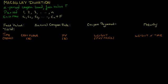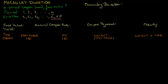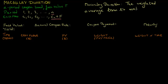Let's understand the concept of Macaulay Duration. We know that a simple N-period coupon bond with base value F is essentially a series of cash flows with the final cash flow occurring at the end of period N. The question is: what is the weighted average maturity of these cash flows? The answer is provided by Macaulay Duration, which is the weighted average term to maturity of a bond's cash flows.